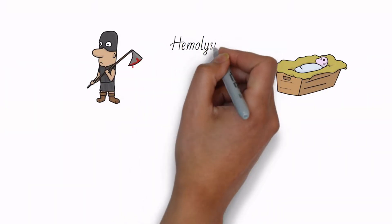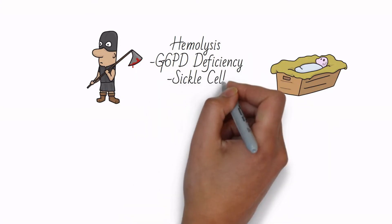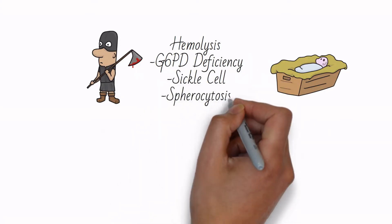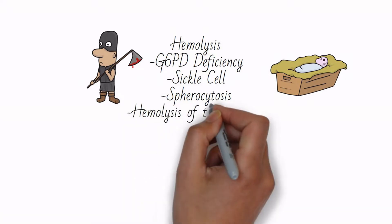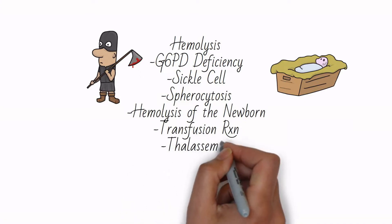Common causes of hemolysis include glucose-6-phosphate dehydrogenase deficiency, sickle cell anemia, spherocytosis, hemolysis of the newborn, transfusion reactions, and alpha and beta thalassemia.